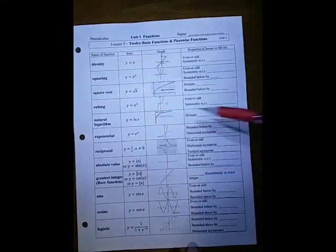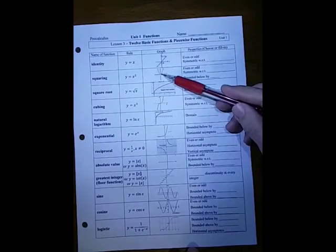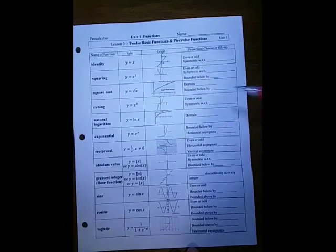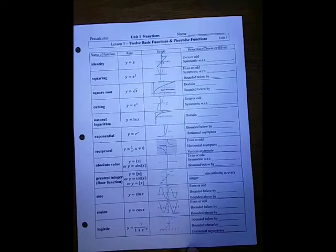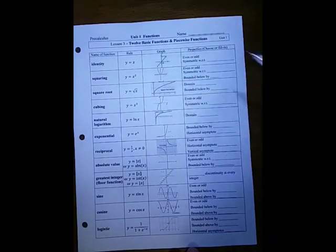Now the squaring function, y equals x squared, which touches at the origin and then goes up — is that an even or an odd function? Is it symmetric with respect to the y-axis or the origin? And then where is it bounded? What's the smallest y-value? That would be that it's bounded below by 0.